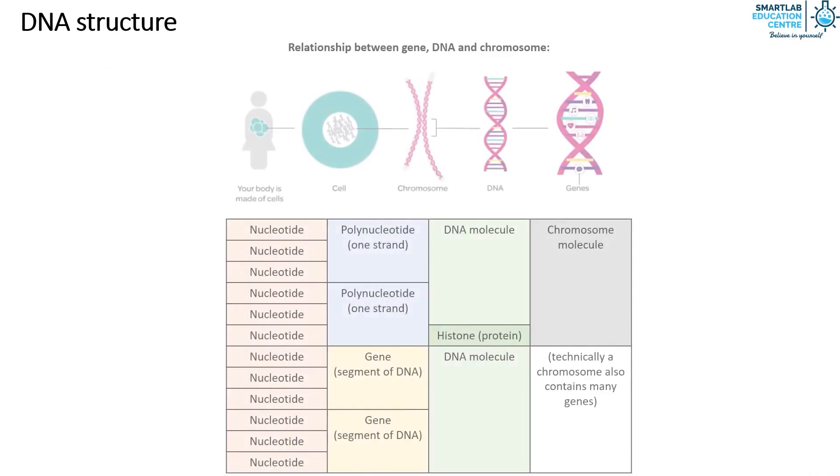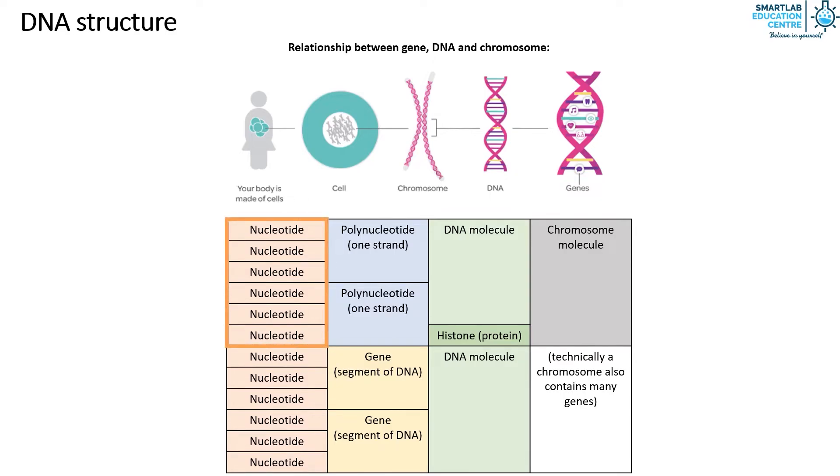Earlier we mentioned nucleotides, DNA, genes, and chromosomes, but how are they all related? We know that nucleotides are the basic units of DNA, thus many nucleotides make up the polynucleotide. These polynucleotides run anti-parallel to one another to form the double-stranded DNA.